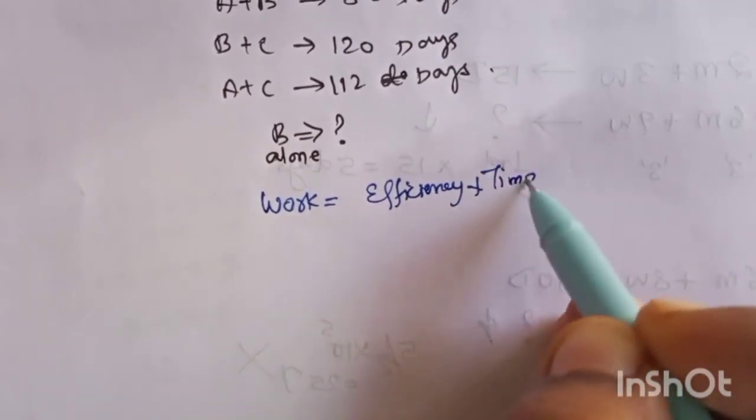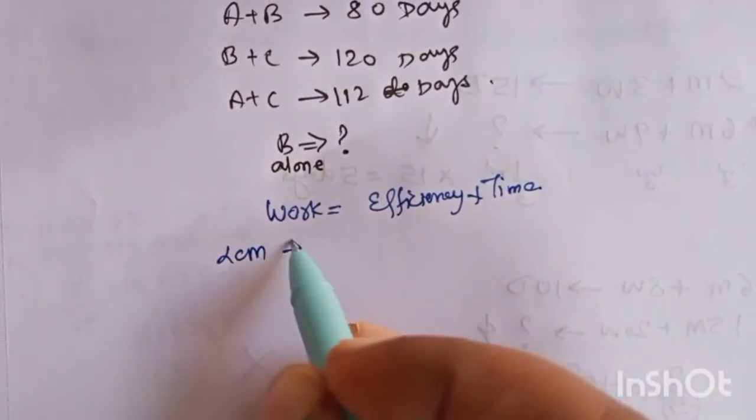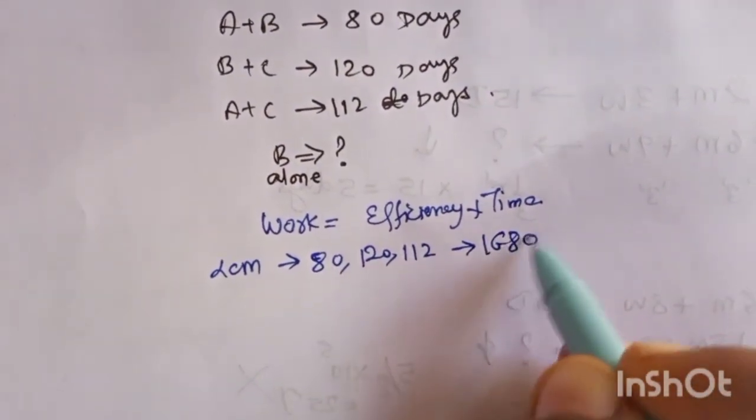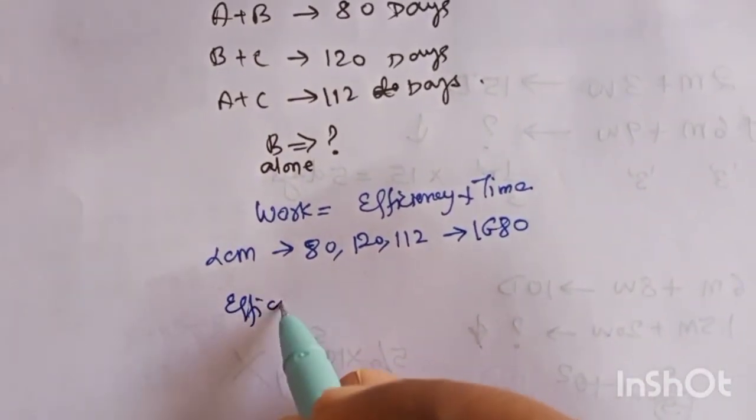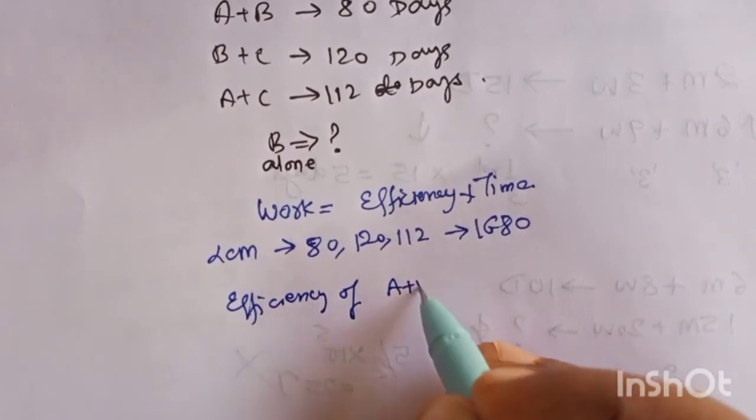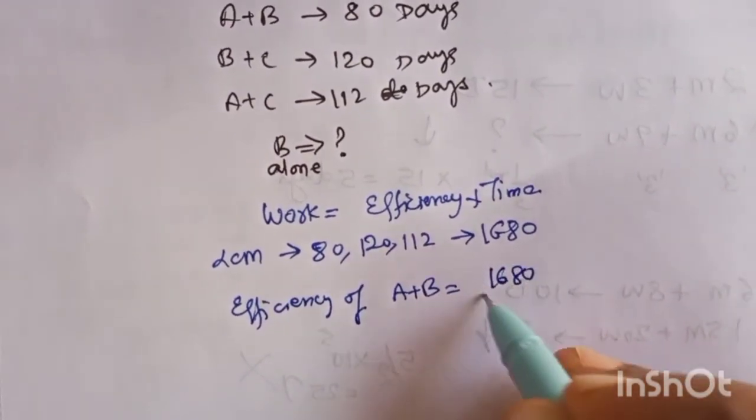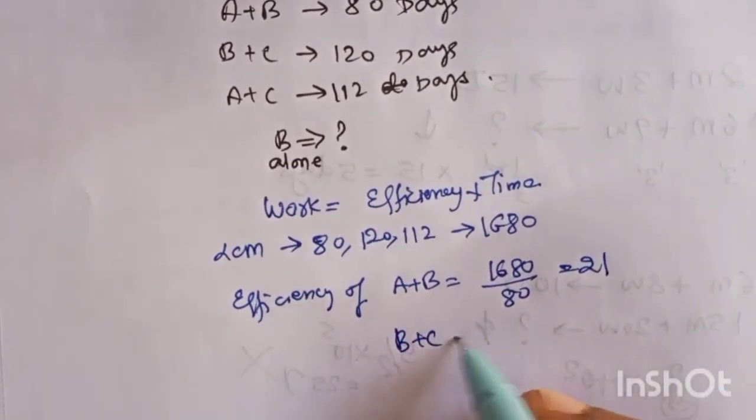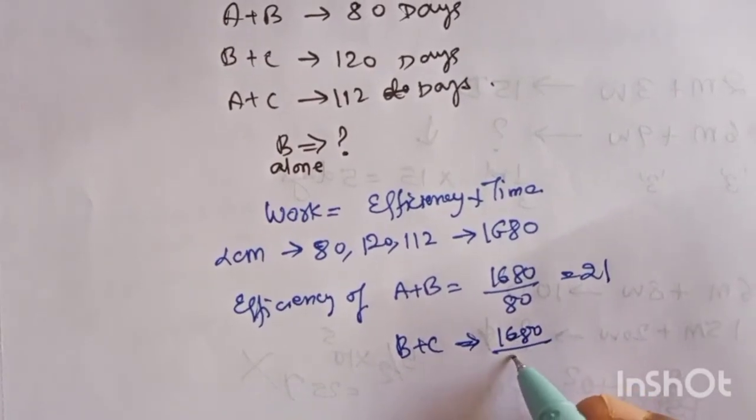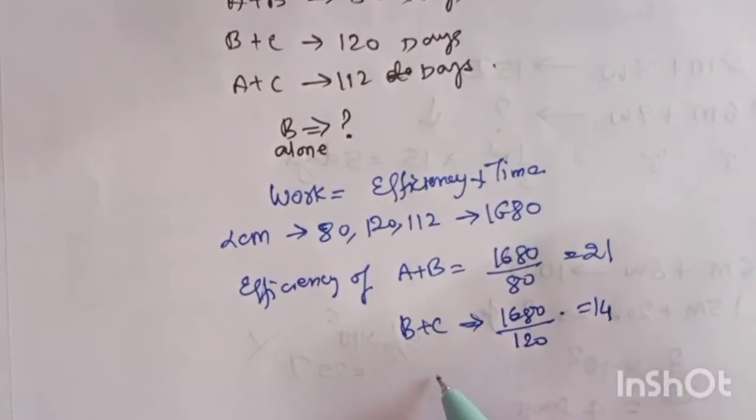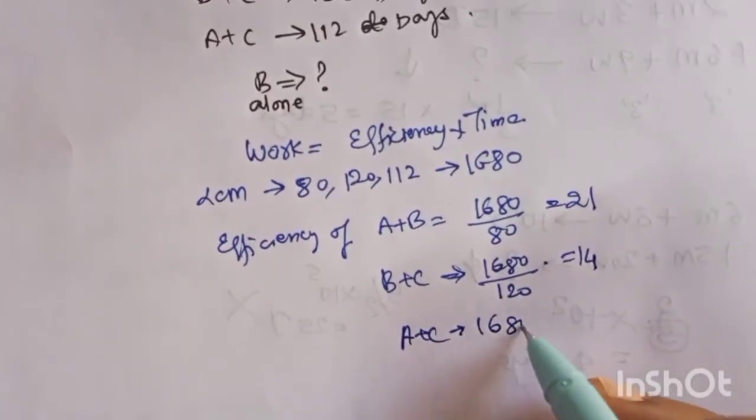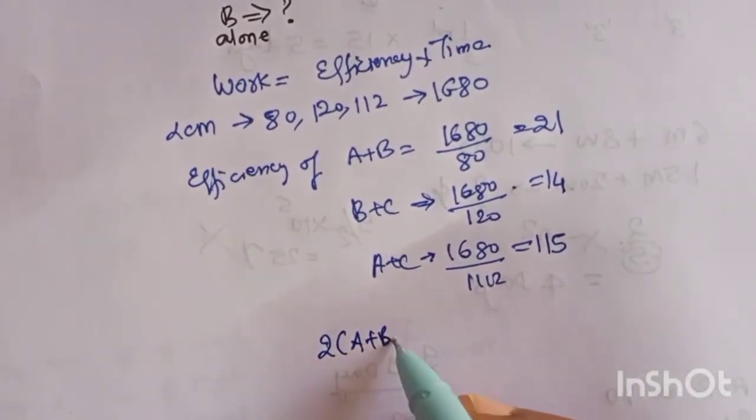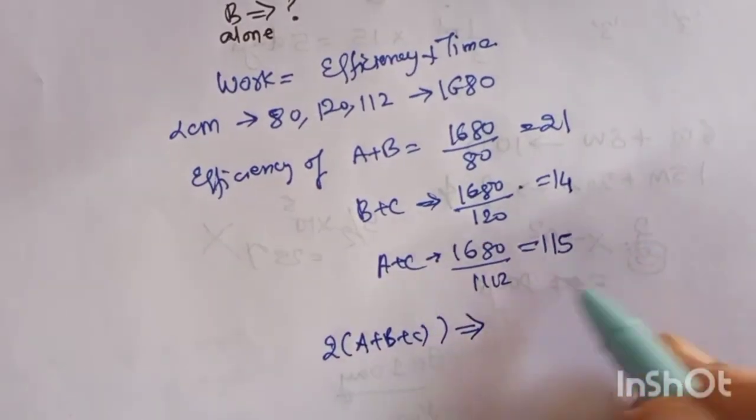So what is the LCM of 80, 120, 112? Comes out to be 1680. So efficiency of A plus B is this: you have to do this LCM by the number of days taken by A plus B, that is 21. Similarly, efficiency of B plus C will be 1680 by 120, which is 14. And then efficiency of A plus C will be 1680 by 112.